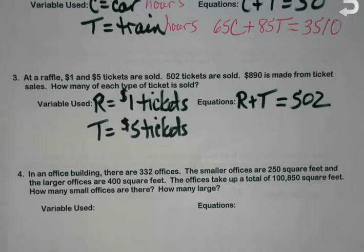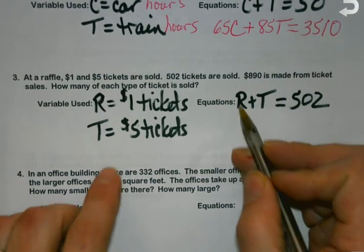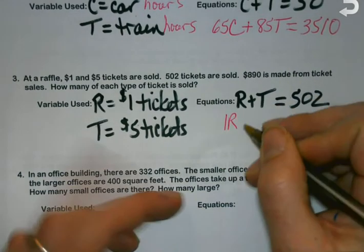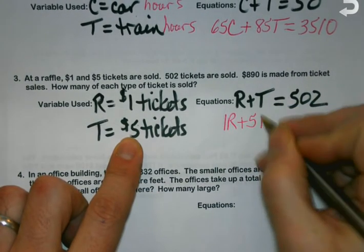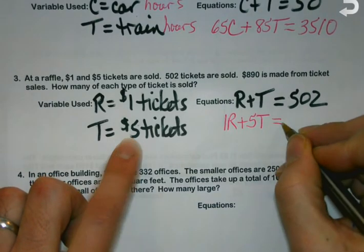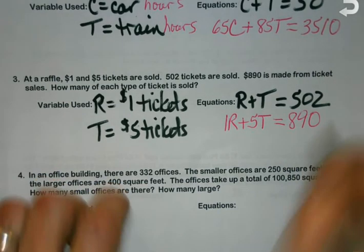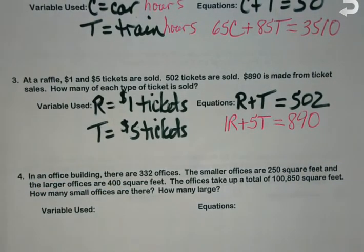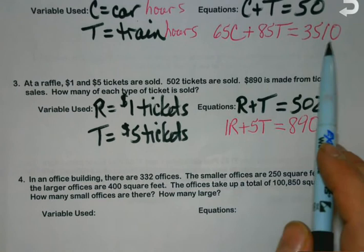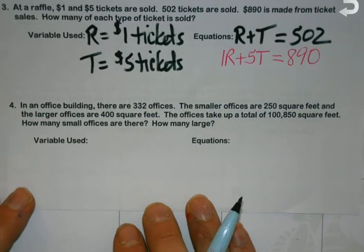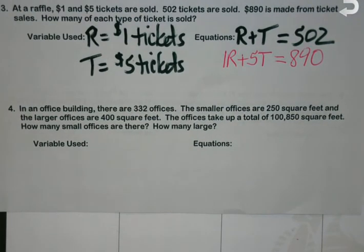My first one is always just going to be add the two variables. How many total tickets did I sell? Five hundred and two. Now on the second one, when we start adding the prices in, how much does a one dollar ticket cost? A dollar. Five dollar ticket? Five. But how much total did I make from ticket sales? Eight hundred and ninety.